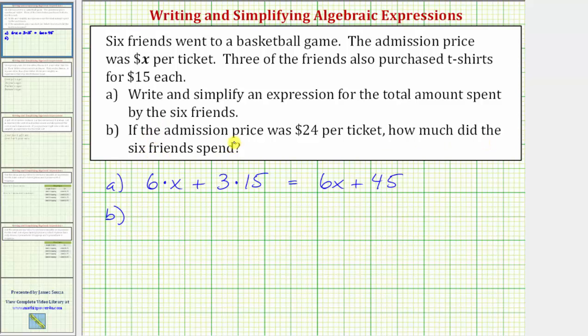Because we are told the admission price was $24 per ticket, we now know X equals 24. If we substitute $24 into the expression 6X + 45 and then evaluate the expression, we will know how much the six friends spent.